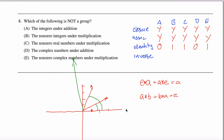For the integers under addition: can you start with any integer and find another integer that, combined in either order, gets you back to zero? Yes — the negative of the element. Pick seven; its inverse is negative seven. For the non-zero integers under multiplication: the identity is one, so we need an element that multiplies with any given element to give one. Start with eight — you'd need one-eighth, but one-eighth is not an integer. So eight has no inverse in this set. The inverse axiom fails for set B, and therefore B is not a group.